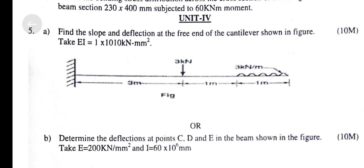Unit 4, Question A. Find the slope and deflection at the free end of the cantilever shown in the figure. Take EI = 1 × 10^10 kN·mm².